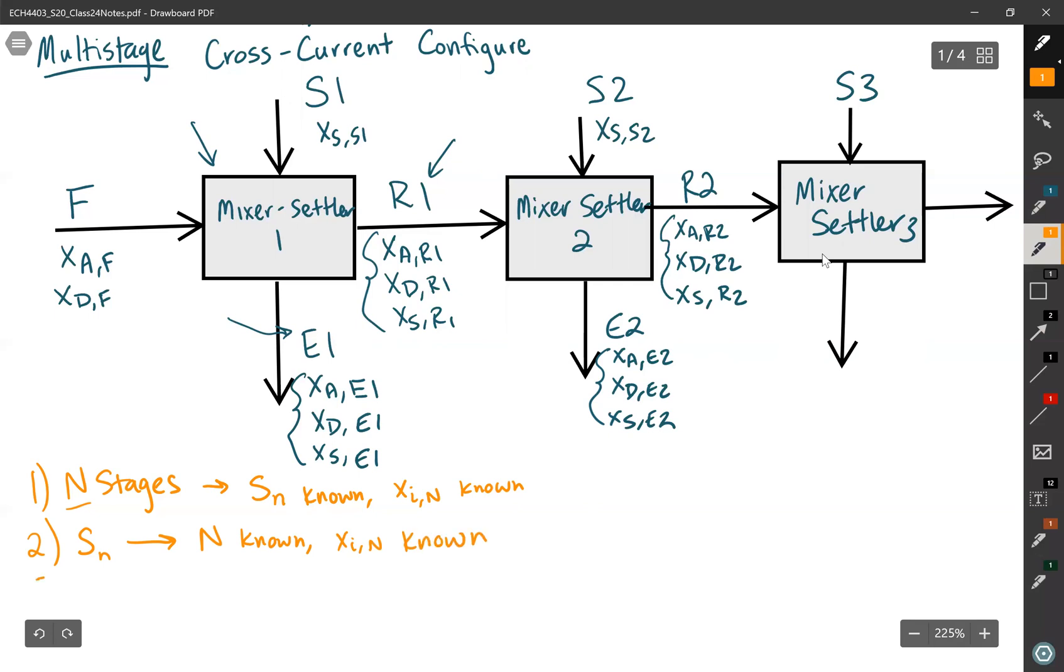And the third type of problem would ask you to find what the compositions are. Xi,e of stage n and Xi,r of stage n are the variables you need to know. And for that, you would need to know how many stages you have and also how much solvent you're feeding to each stage. And I generally classify these as the design, evaluate, and predict type problems.